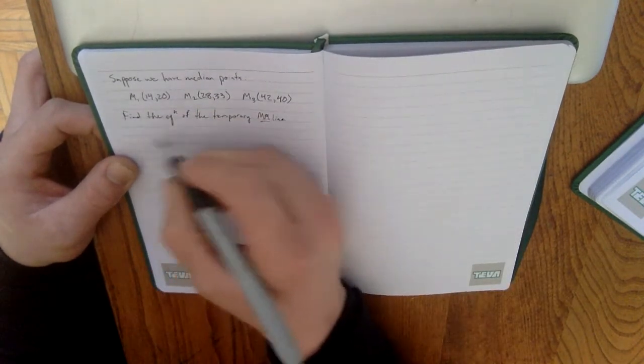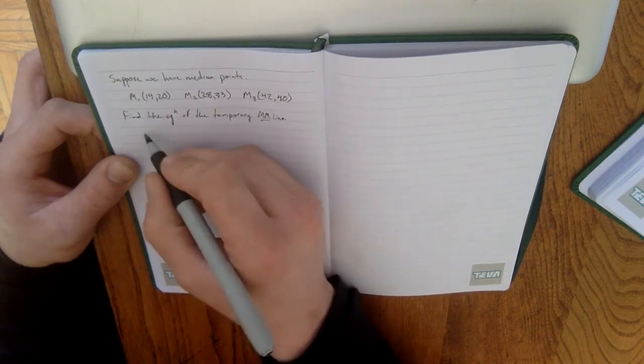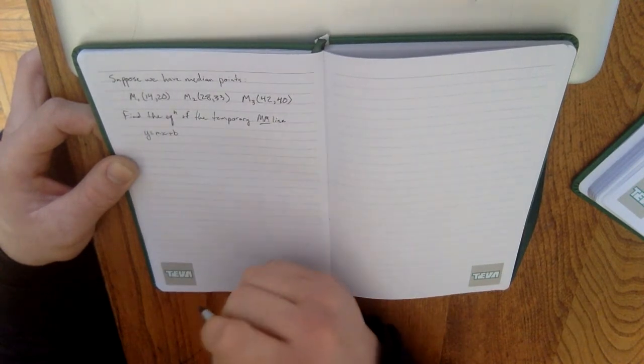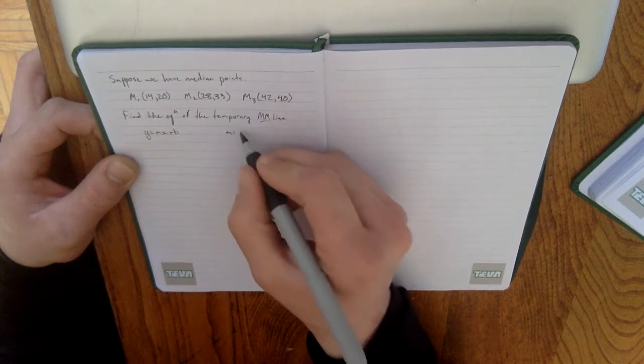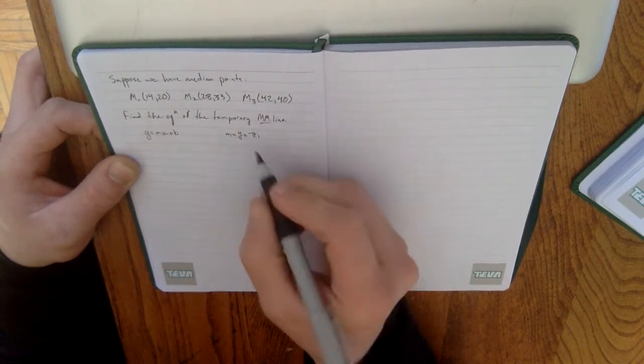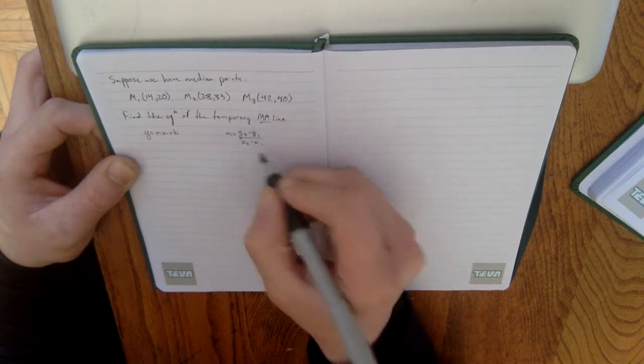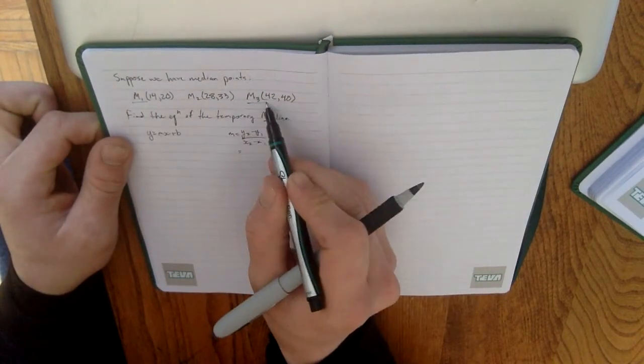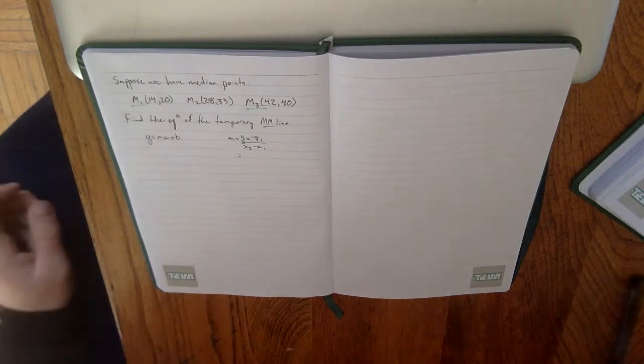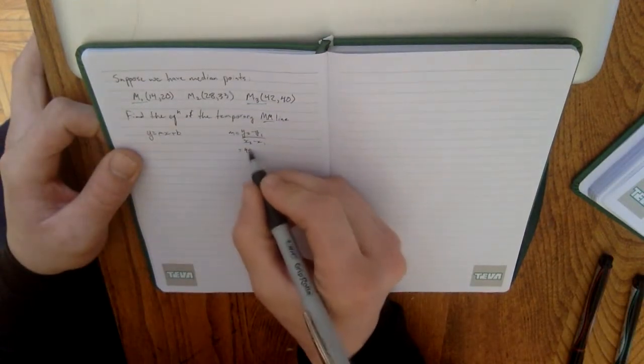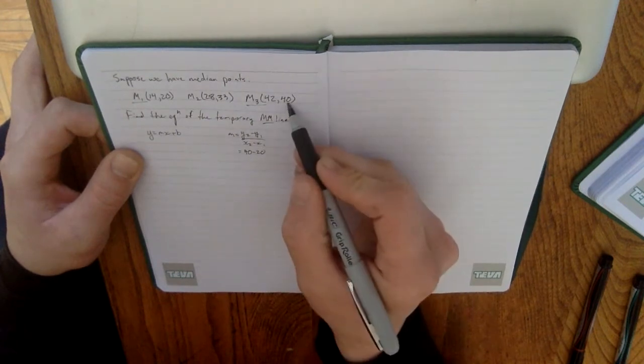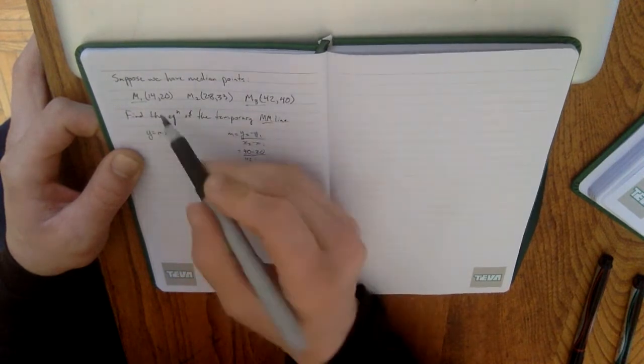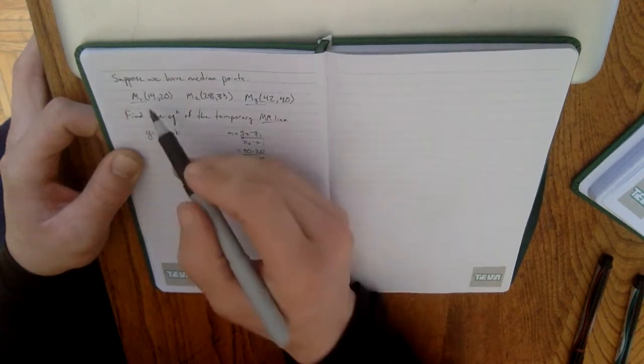So, to find that equation, I need to use the slope formula, because I'm going to need to substitute something in place of M for y equals mx plus b. So, my slope formula is y2 minus y1 over x2 minus x1. And since I'm using points M1 and M3 to find the equation of the median-median line, I'm going to substitute in points 40 and 20 for y2 and y1 and points 42 and 14 for x2 and x1.